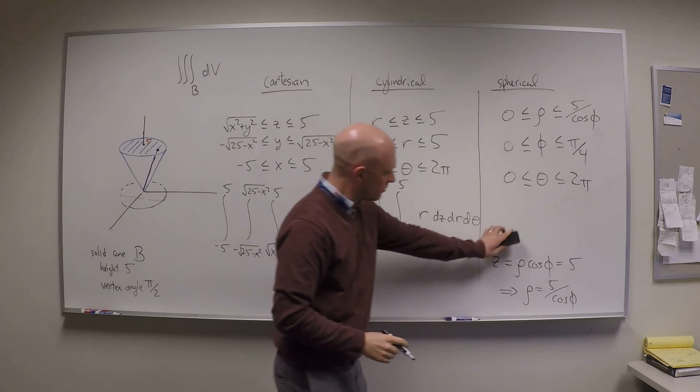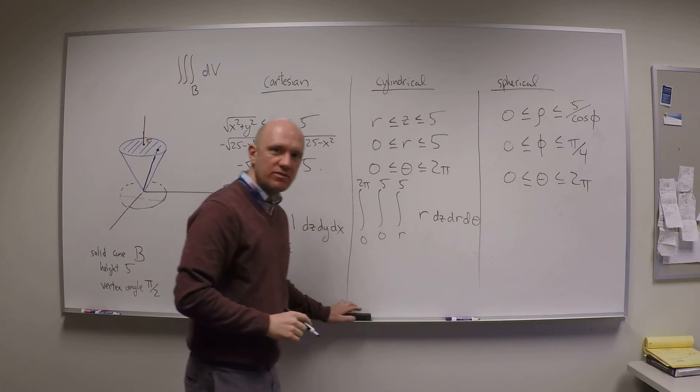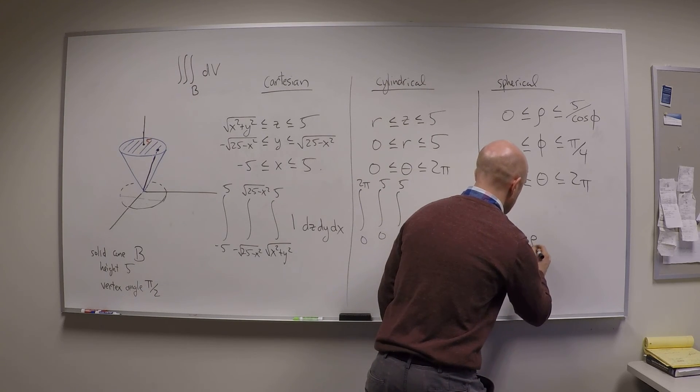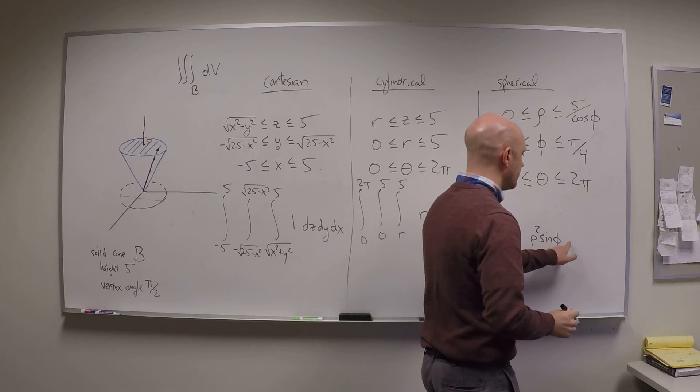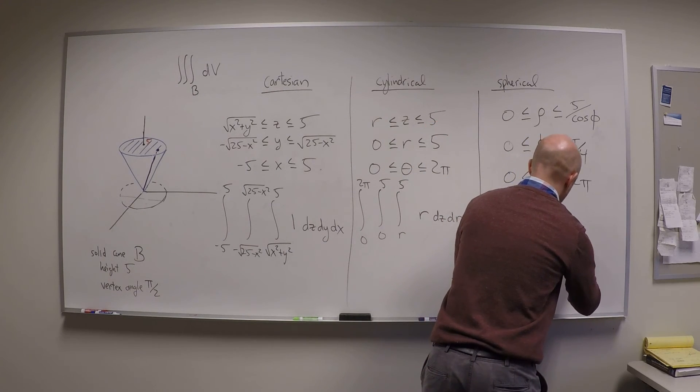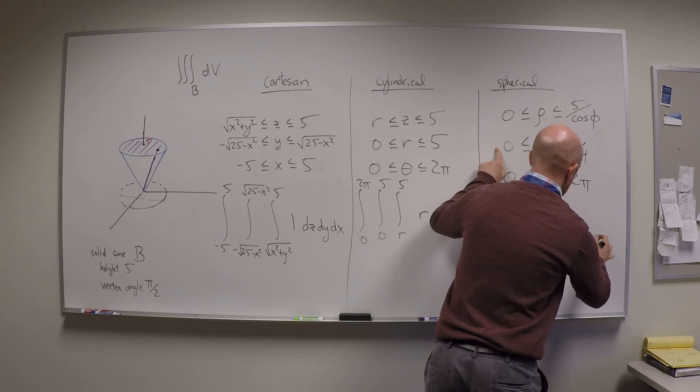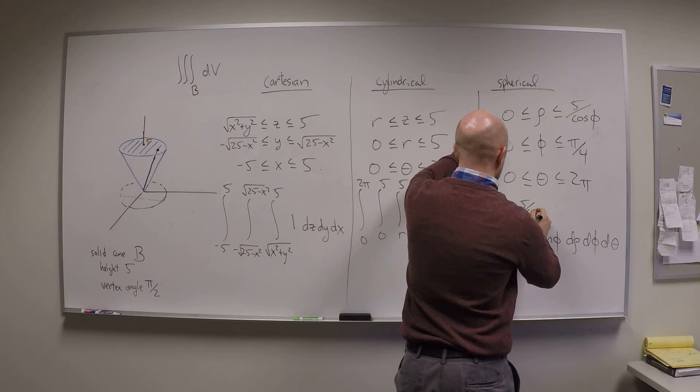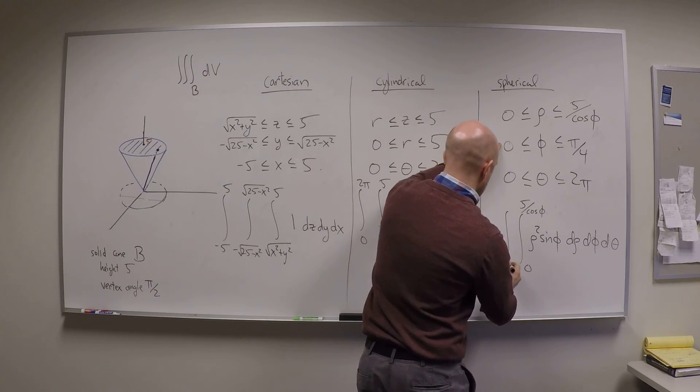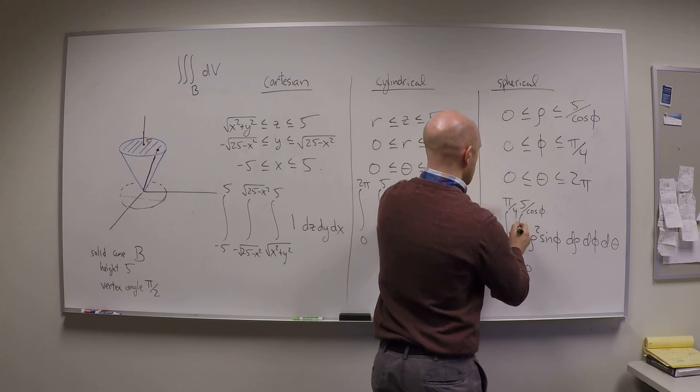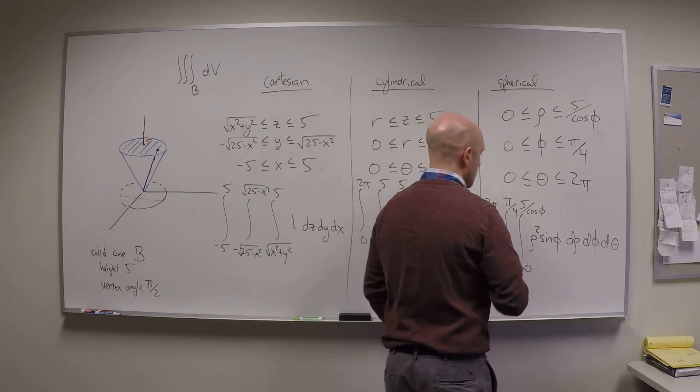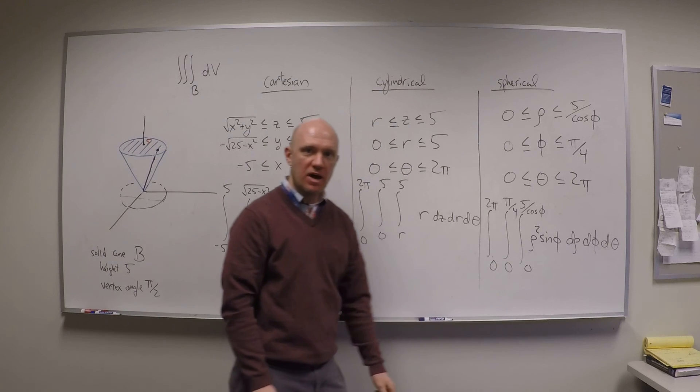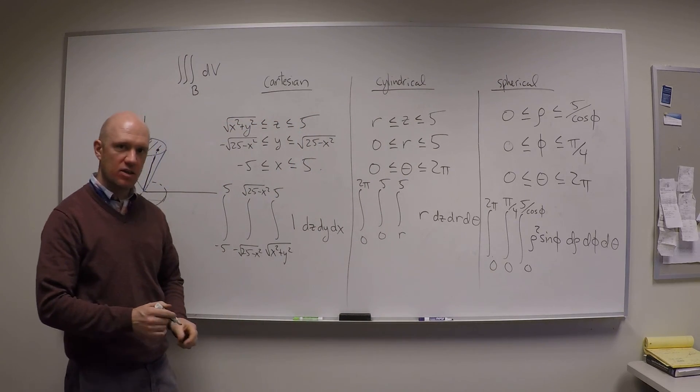Now let's write down the volume integral. Spherical coordinates have the strangest dv, so let's make sure we write that. I've got a rho squared sine phi. That's the part of the dv. And then I'll have a d rho, d theta, d phi. So let's go rho first, then phi next, and then d theta last. The first integral is from 0 to 5 over cos phi. The next integral is from 0 to pi over 4, and the last integral is from 0 to 2pi. And that will give us the volume of the cone. It's not a bad exercise to plug all these three guys into Mathematica, and I sure hope you get the same thing, otherwise I'll have to redo this video.